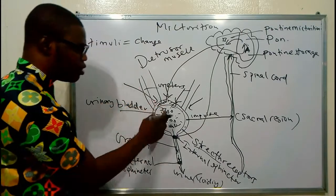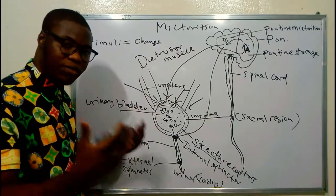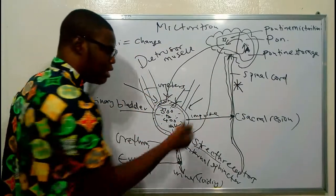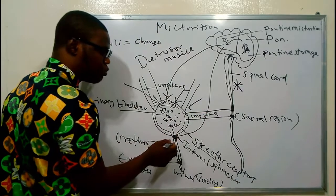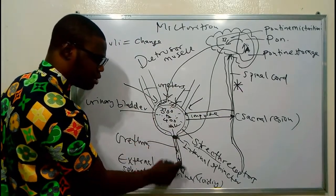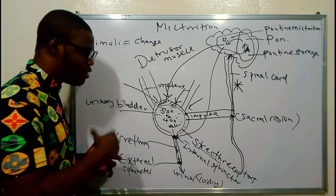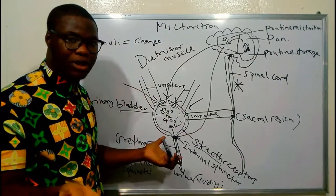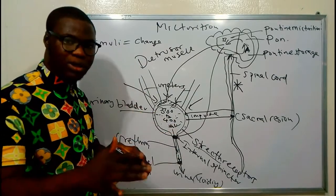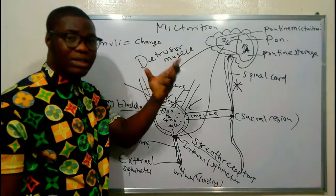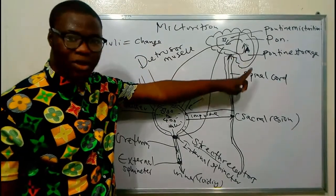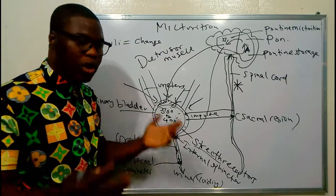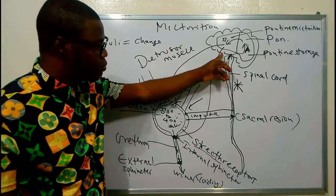In infants, when the urinary bladder is filled with urine, the impulse is sent to the sacral region of the spinal cord but does not ascend to the brain. It comes back directly to the detrusor muscle, which squeezes, the internal sphincter opens, and urination occurs. That is why infants are unable to control their urination — their brain is not involved. For adults, the impulse goes to the pons, either the pontine storage or pontine micturition center; for infants it does not reach the brain at all.